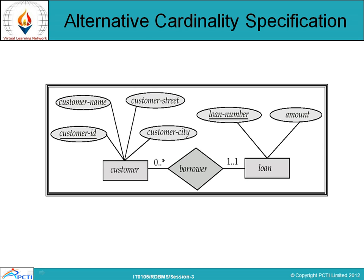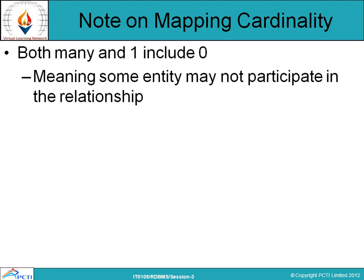An alternate cardinality specification uses a star (*) symbol for 'many' and '1' for 'one.' Note that in mapping cardinality, both 'many' and 'one' include zero, meaning some entities may not participate in the relationship.